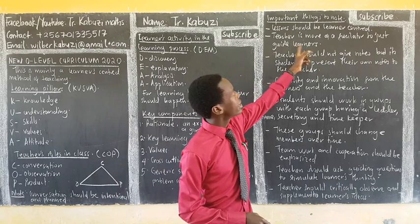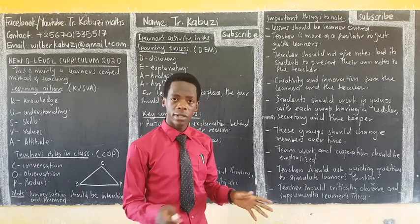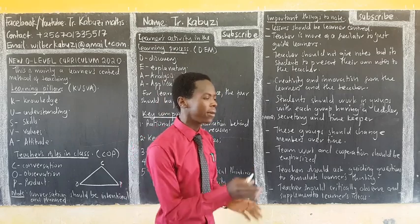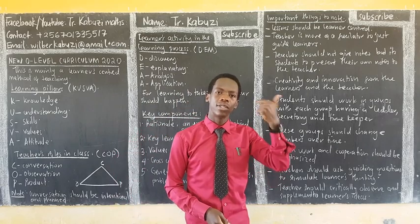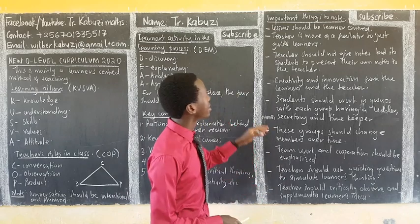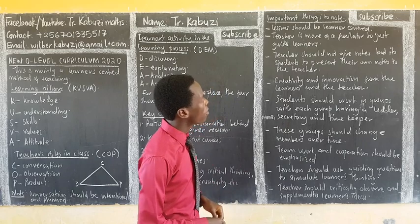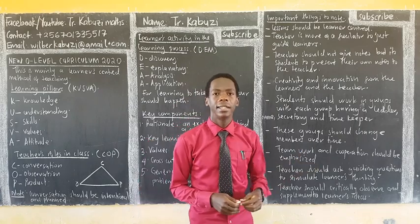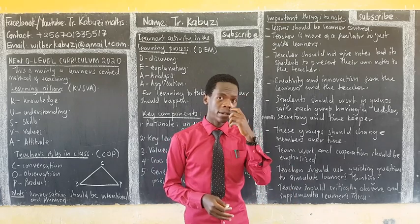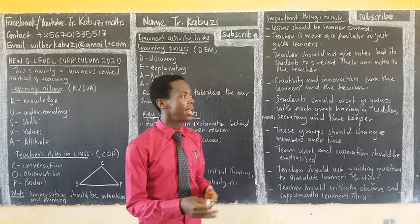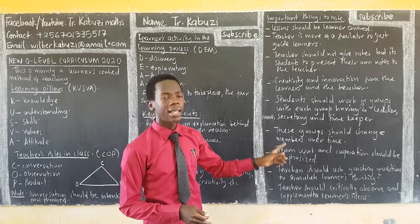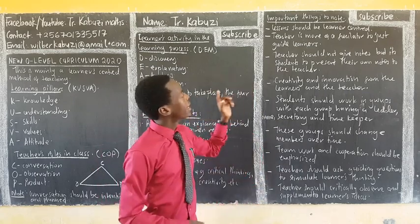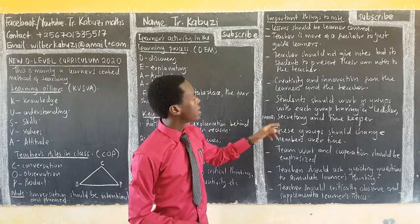The learner should be at the top and you are guiding, moving around, observing. A teacher is more of a facilitator — you move around, and when you see someone struggling, you guide them: 'What if you do this? What if you go this way?' Teachers should not give notes; instead, students present their own notes. After the lesson you harmonize — you select correct work from different groups, have one group present, and then based on what other groups have, you harmonize and give the reasons.